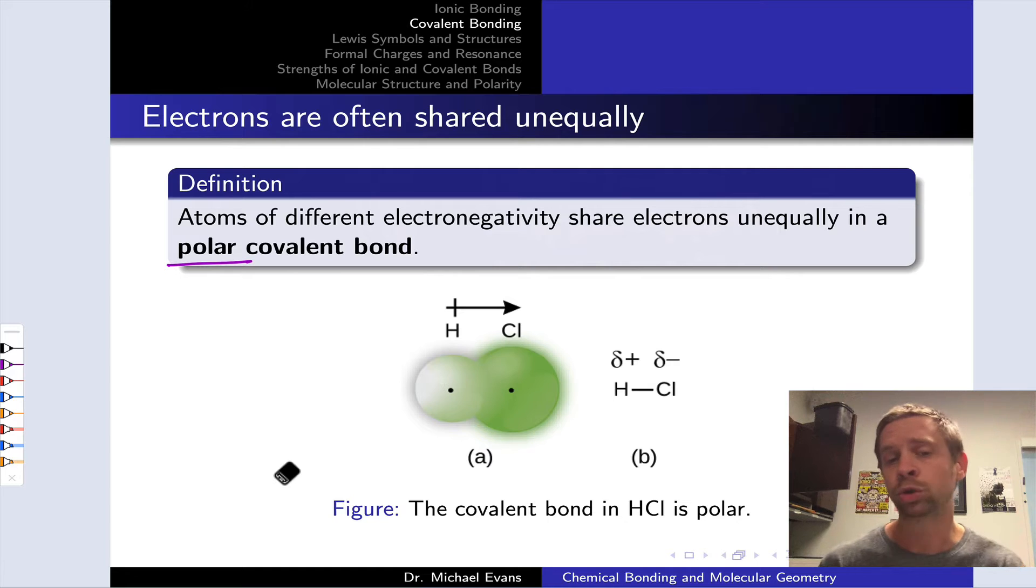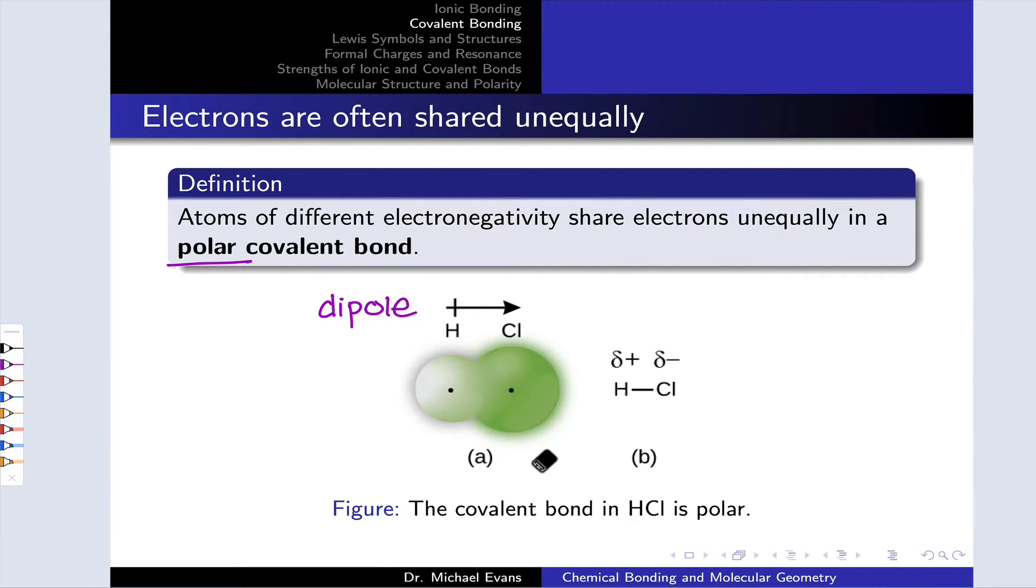This is an example of a polar covalent bond, and that's associated with what we call a dipole, a separation of charge, because the electrons are spending more time near the more electronegative chlorine and less time near the less electronegative hydrogen atom. This leads to a dipole, positive charge near the hydrogen, negative charge near the chlorine, and the root of it is the greater electron density near the chlorine atom.